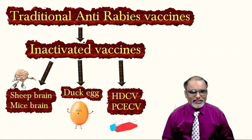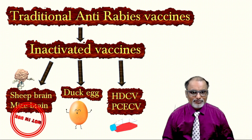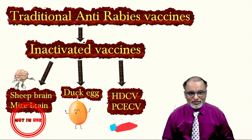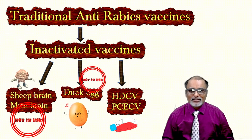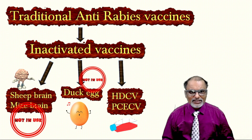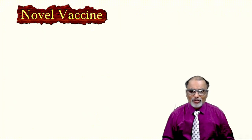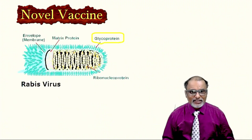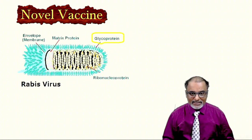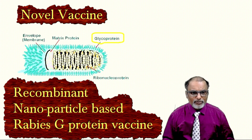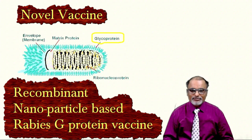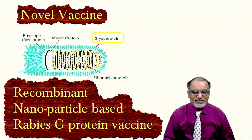The sheep brain or mice brain vaccines cause some neural problems, so they are not in use. Egg-based vaccines cause allergy to egg albumin, so they are also not in use. Currently we are using cell culture vaccines. This novel vaccine is not an inactivated vaccine. We are using glycoprotein — the G protein — as a vaccine candidate, which is present on the surface of the rabies virus. It is a recombinant nanoparticle-based rabies G protein vaccine.